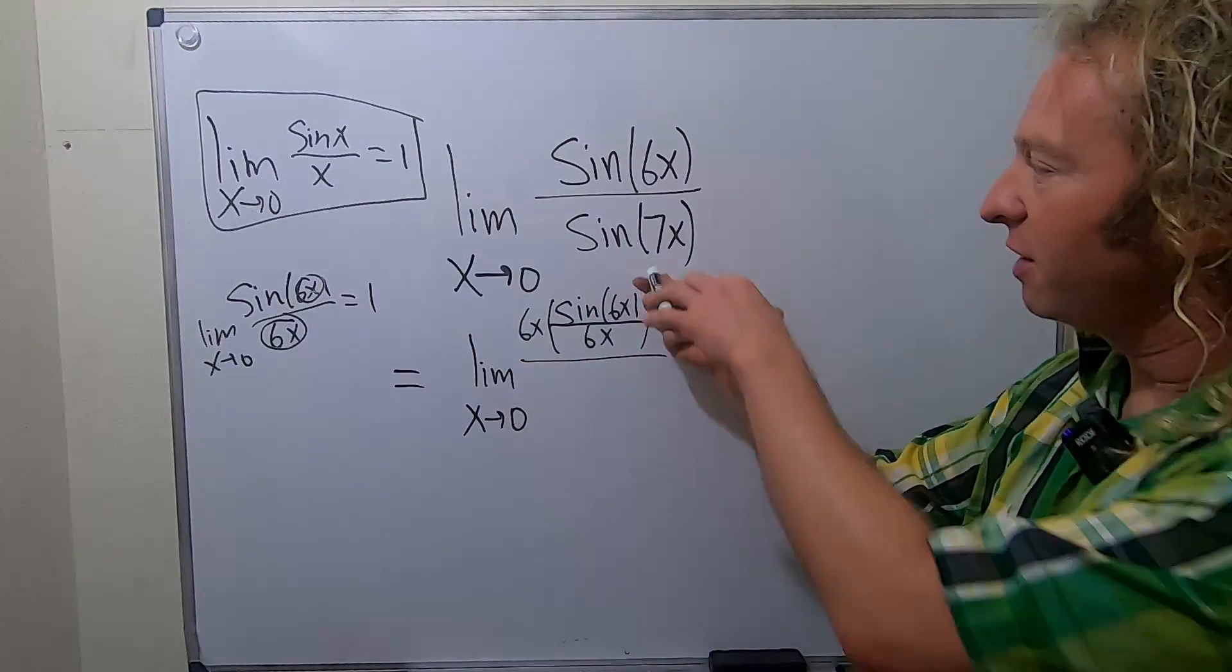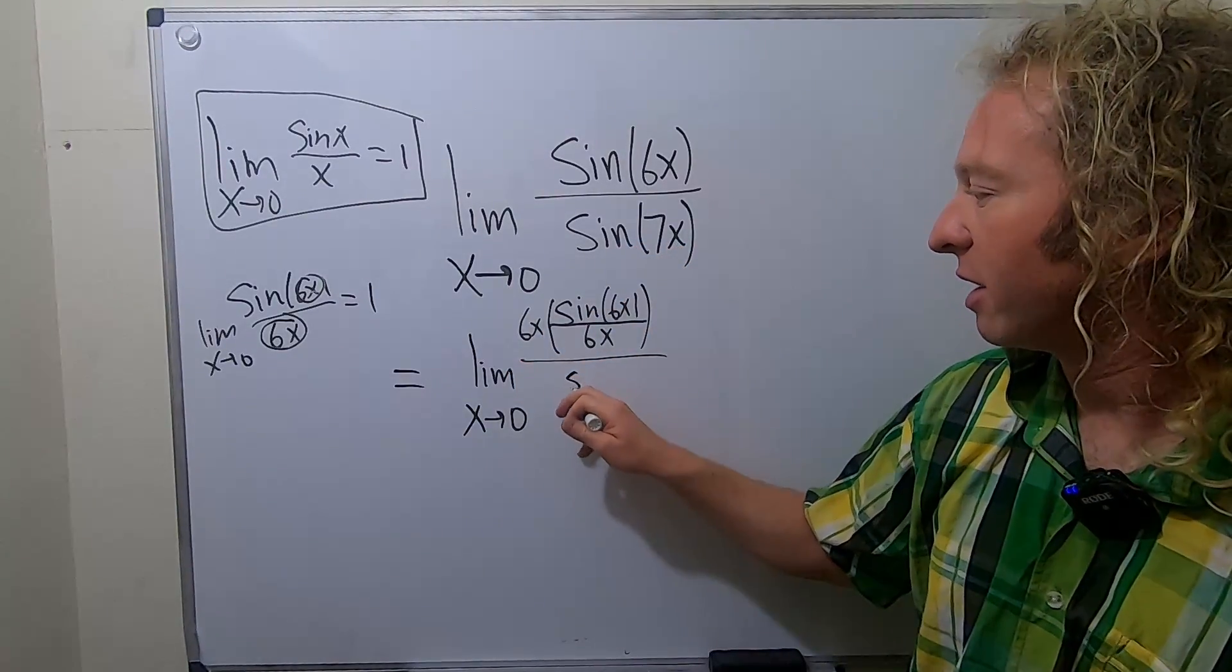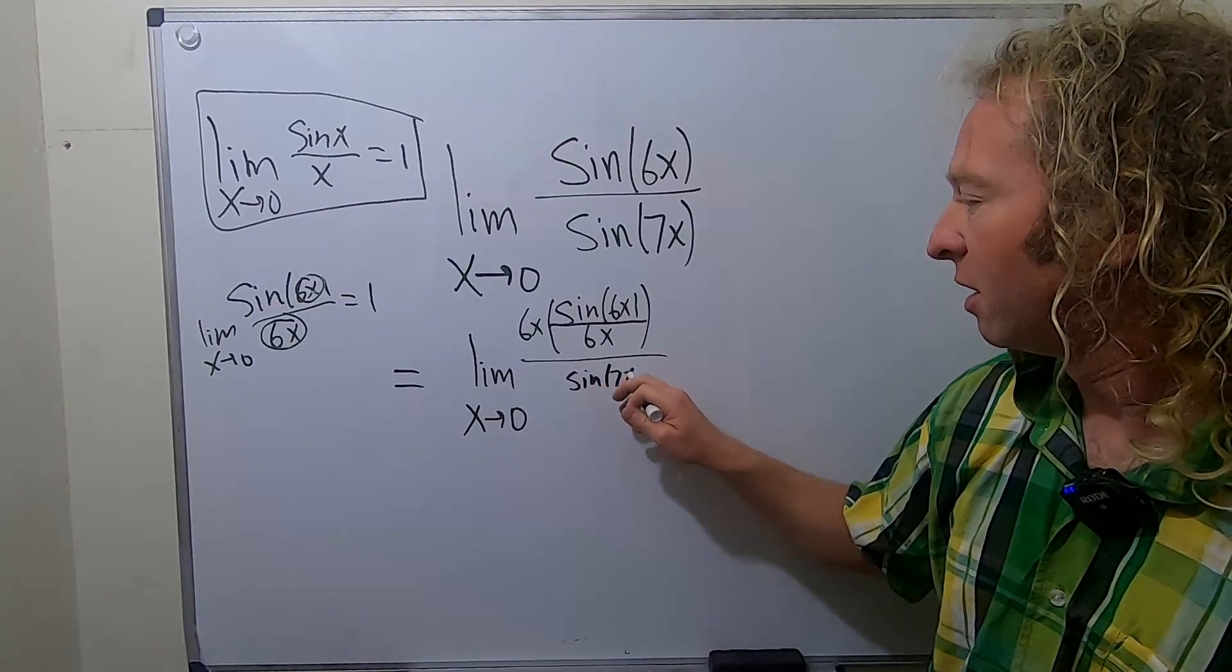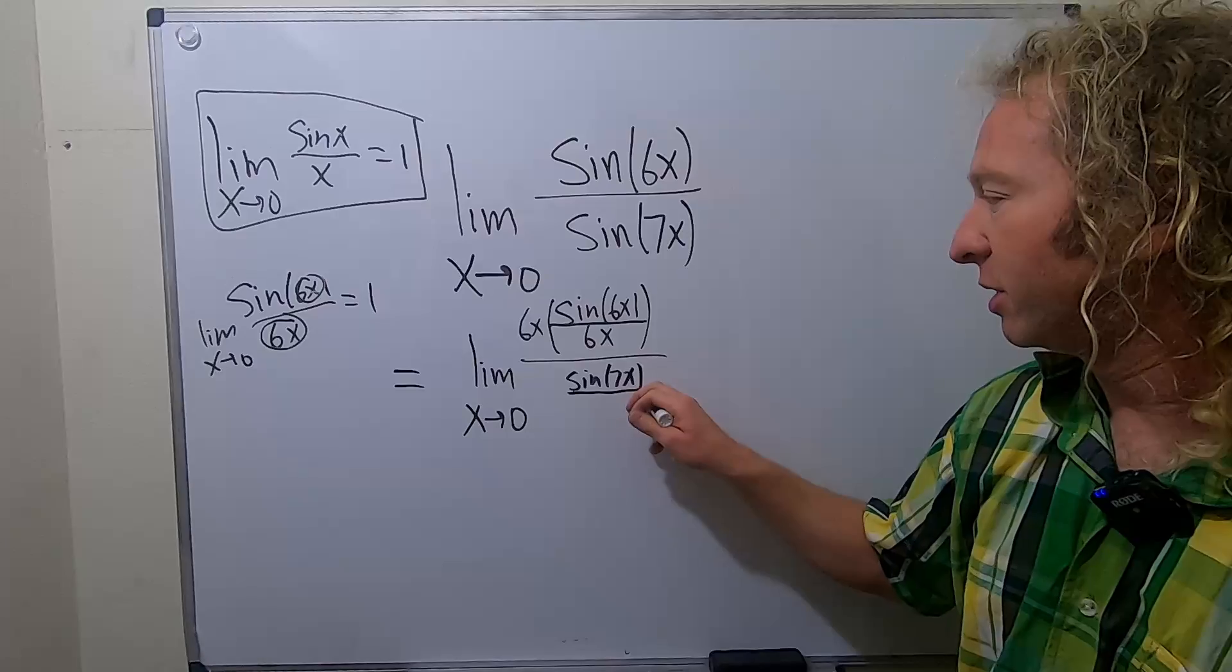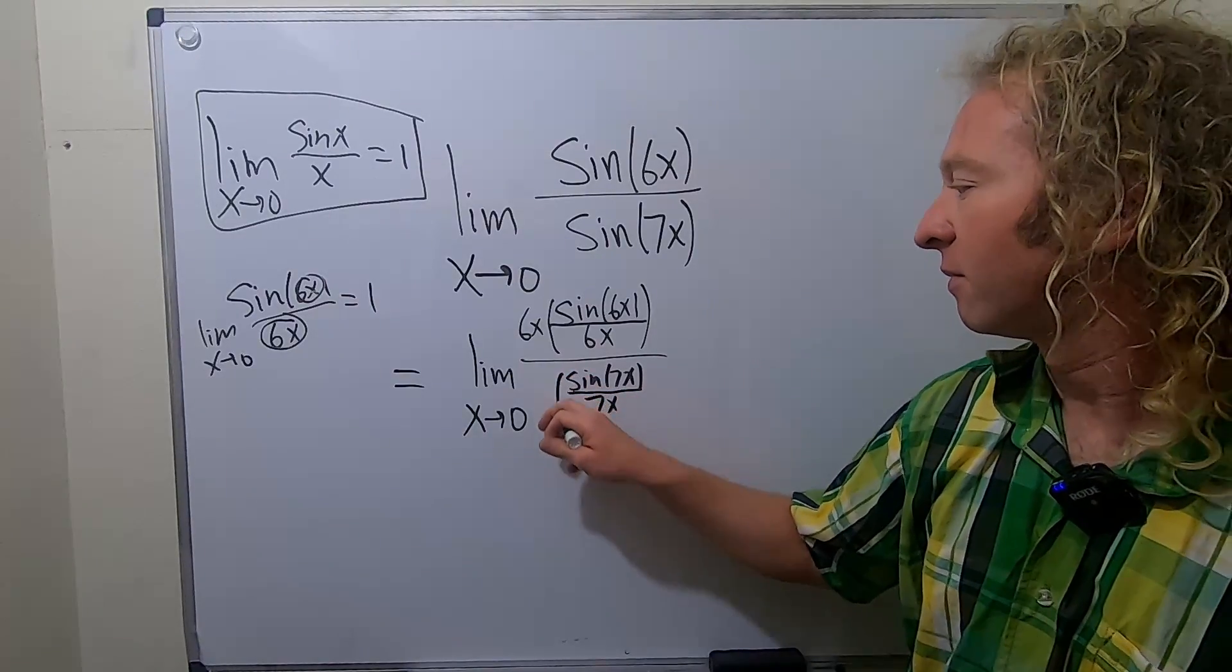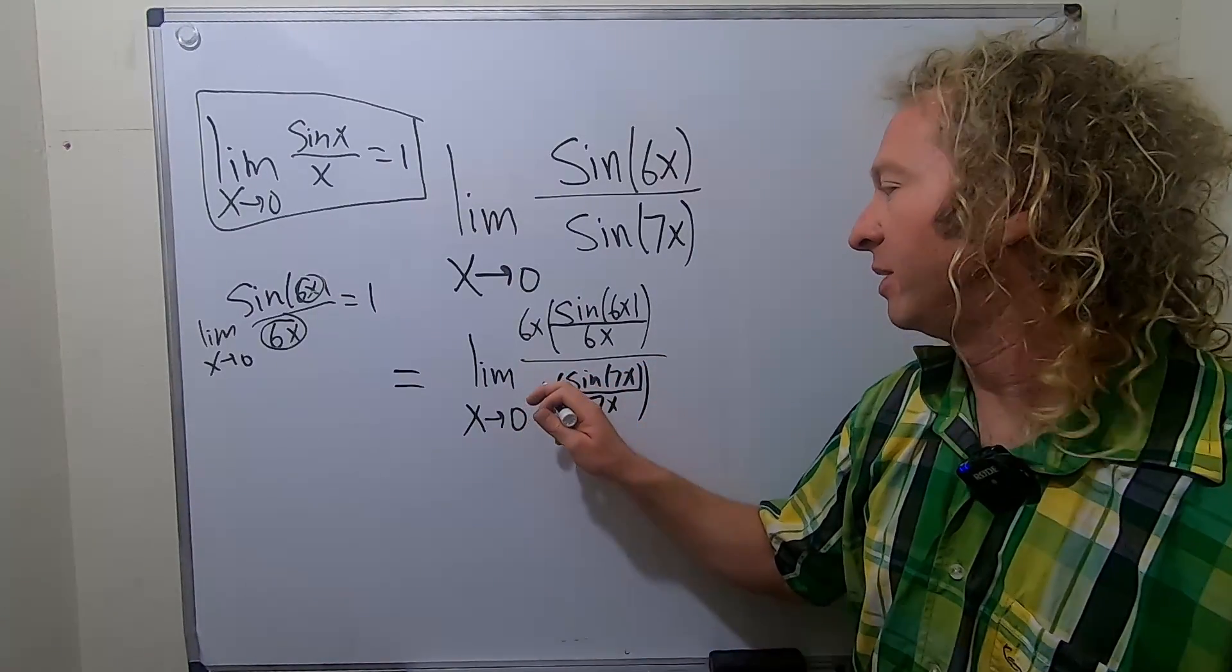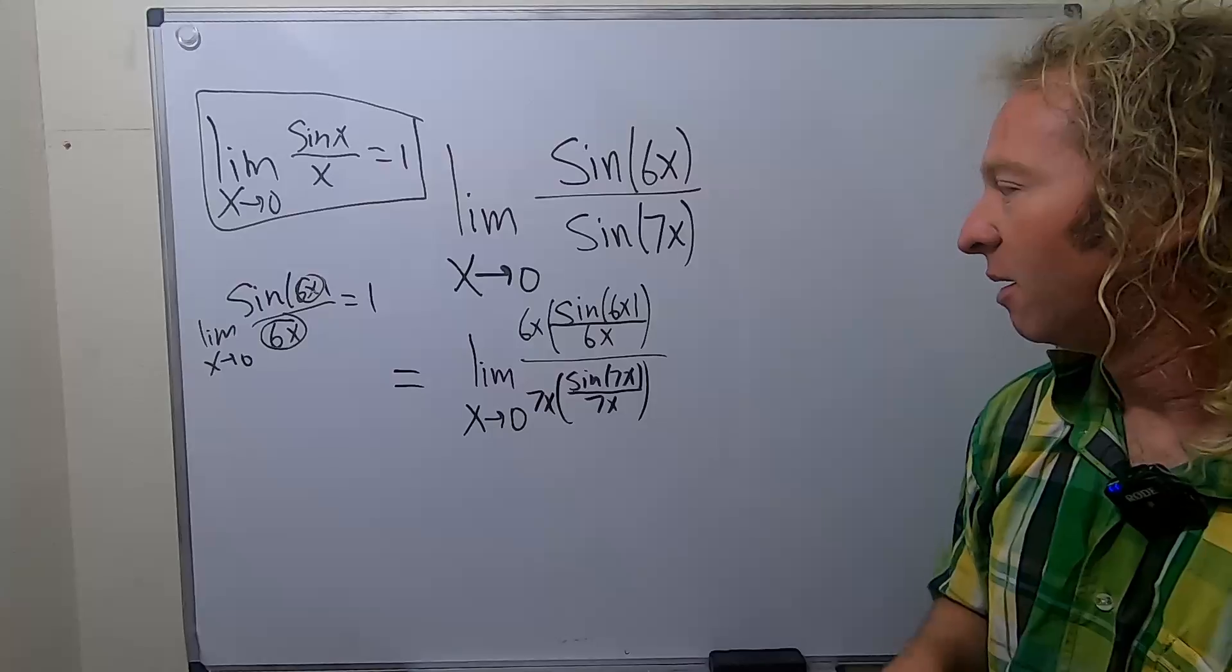This is all divided by, then you do the same thing with this one. Sine 7x. And so you want a 7x down there. You want to put that there. So what you do is you just put it there - 7x. Then you just put it there - 7x. Beautiful stuff.